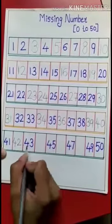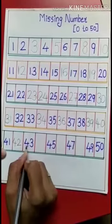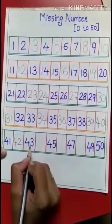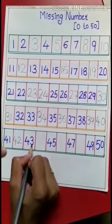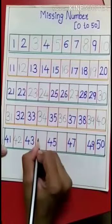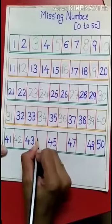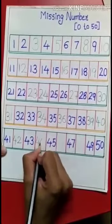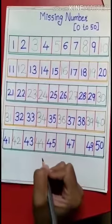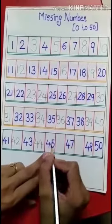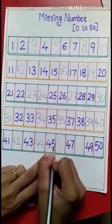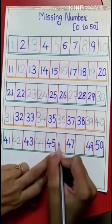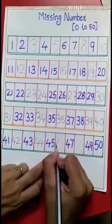Now start from 41, 41, 41. After 41, 41, 42, 42. After 42, 42, 43, 43. Now tell me children, what comes after 43, 43? 44, 44. Very good.